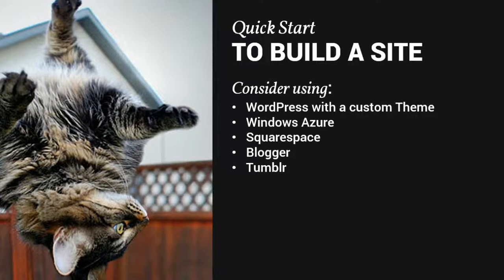Depending on how and where you want to host your website, if you don't have hosting, you have options. Another option for hosting a site, even a WordPress site, is Windows Azure. It's really simple — you just go in, sign up for an account, and you can get that account through BizSpark or other programs. Using Azure, you can do a one-click install for WordPress, then pick a theme, start filling out your content, and you have a website in no time.